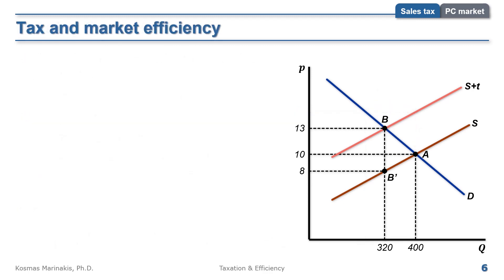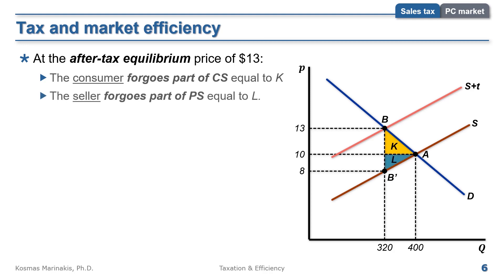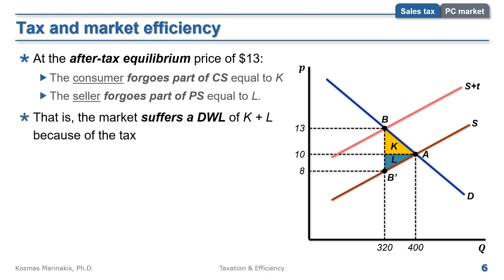Let's see now what happens with market efficiency. Notice in the graph that the actual supply curve is still S, and that the after-tax equilibrium at point B is not on it — it is still on the actual demand, but not on the actual supply. This is a strong indication that our market has a deadweight loss now. At the equilibrium price of $13, consumers forego part of their surplus equal to K, while the seller foregoes part of his surplus equal to L. This means that this market suffers a deadweight loss of K plus L because of the tax.